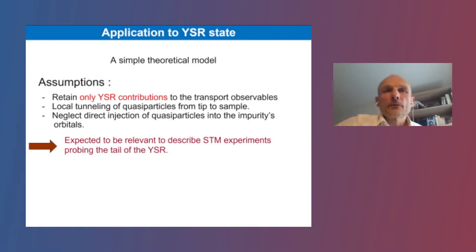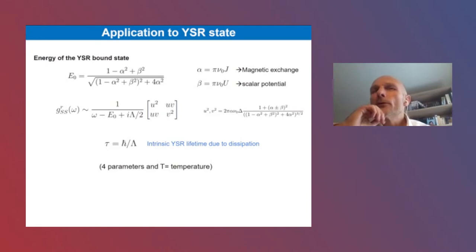What about the model? We consider a very simple model: a classical magnetic field and eventually some potential. This gives you two parameters, two dimensionless parameters. So we are left with a total of four parameters, basically. The energy of the Shiba bound states epsilon_0 here. The U and V, which can be related to the electronic and hole part of the wave functions, which are also related to the magnetic and non-magnetic part of the interactions. Temperature is an extra parameter which is obviously relevant. And the fourth parameter is lambda or tau, which is the inverse of lambda, which is the intrinsic lifetime of the Shiba bound states.